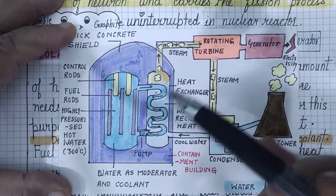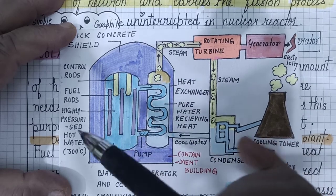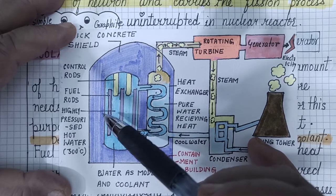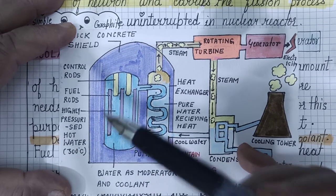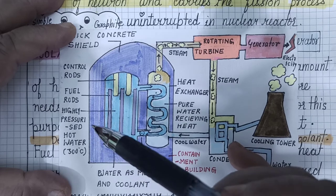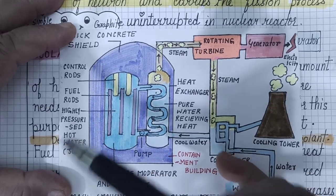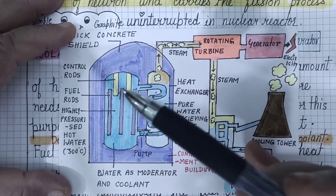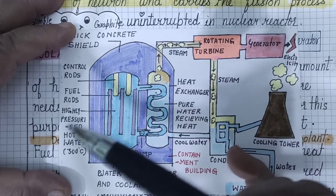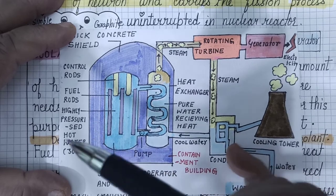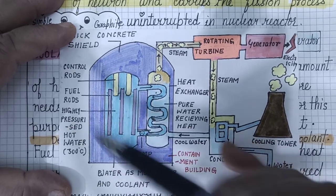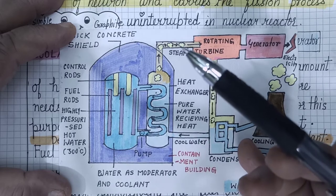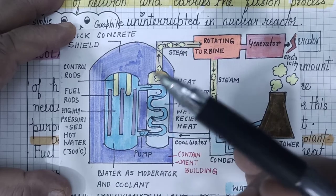Nuclear fission is not easy to carry on continuously because the raw material uranium contains uranium-235, uranium-238, and traces of uranium-234. Uranium-238 interrupts the process by absorbing neutrons of different velocities that are suitable for uranium-235 to absorb, causing the process to stop.